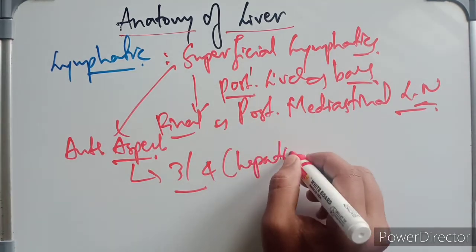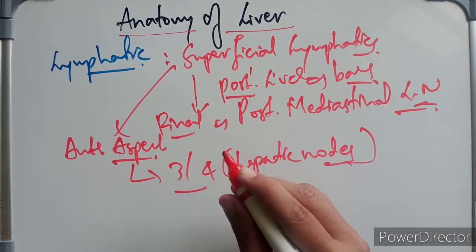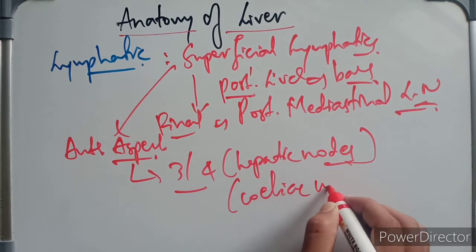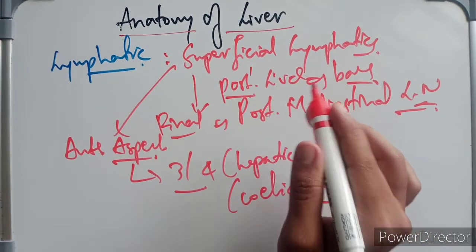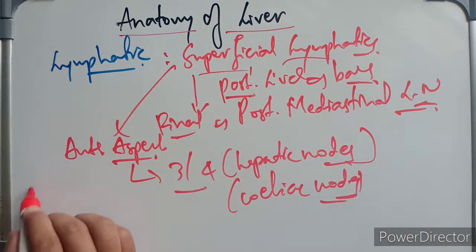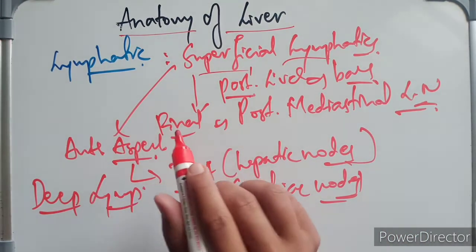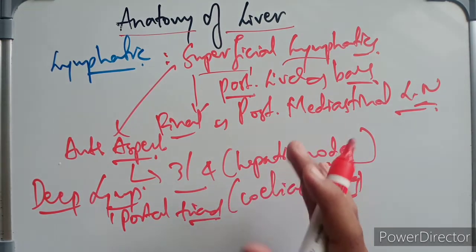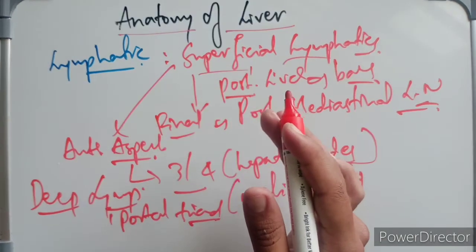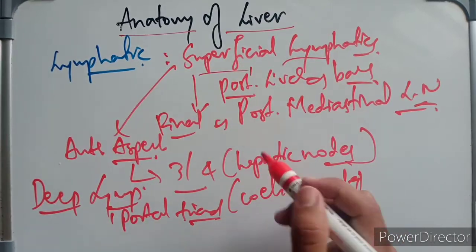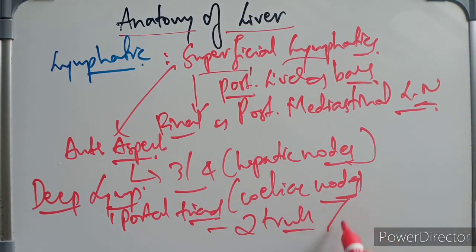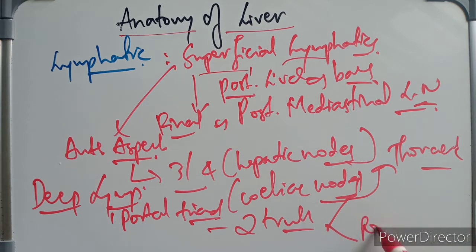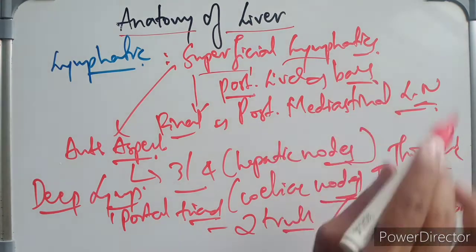These nodes are known as the hepatic nodes. They also receive lymphatics from the gallbladder. The efferents from these nodes run downward along the hepatic artery to the celiac nodes. The lymphatics accompanying the portal triad constitute the deep lymphatics. The deep lymphatics accompany the portal triad and form two trunks: the ascending trunk, which enters the thorax through the caval opening and terminates in nodes around the inferior vena cava; and the descending trunk, which empties into the hepatic nodes at the porta hepatis.